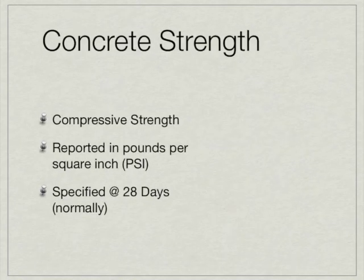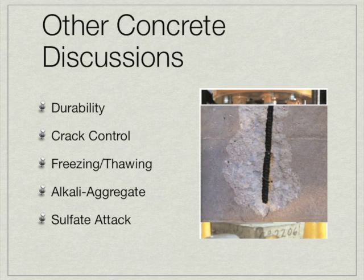As we wrap up this introduction to concrete, I would like to say one thing about hardened concrete. Up until now we've talked about fresh or plastic concrete, but hardened concrete is usually measured by compressive strength. It's reported in pounds per square inch here in the U.S. and is typically specified at 28 days. This is not to say that concrete strength is the end-all, be-all of our hardened concrete. There are many other issues to be concerned about, specifically in the field of durability: crack control, freezing and thawing, alkali-aggregate activity, and sulfate attack — all of which can take place after our concrete has been placed.